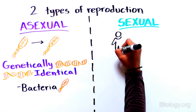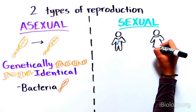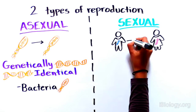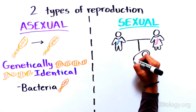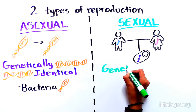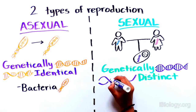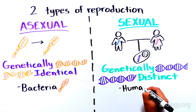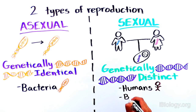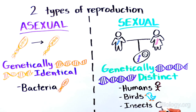Sexual reproduction is much more complex and involves two members of a species coming together to produce genetically distinct offspring. Most eukaryotic multicellular organisms, such as humans, birds, and insects, undergo sexual reproduction.